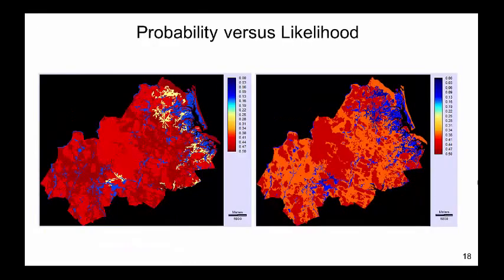Compare these probability and likelihood maps — they are fundamentally different. One of the most obvious differences is that values mapped as yellow in the northeast in the probability map appear as blue in the likelihood map. These values represent the probability and likelihood for the fine-grained deposit category, which has the greatest difference between probability and likelihood, as we will explain in the next slides.